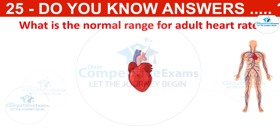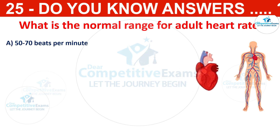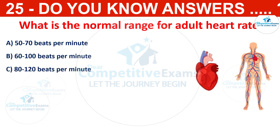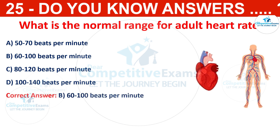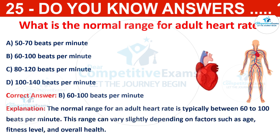Which is the normal range for adult heart rate? The options are 50 to 70, 60 to 100, 80 to 120, or 100 to 140 beats per minute. The correct answer is 60 to 100 beats per minute. This range can vary slightly depending on factors such as fitness level and overall health.